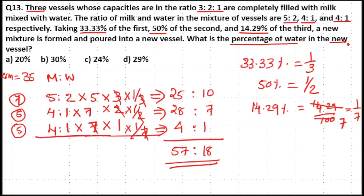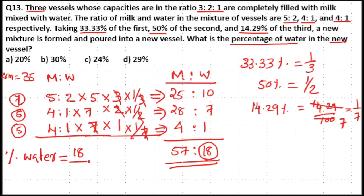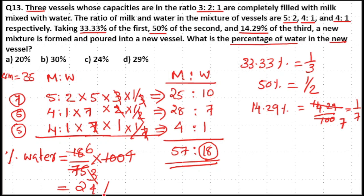The question asks for the percentage of water in the new vessel. Water is 18 units out of a total mixture of 57+18 = 75 units. So the percentage of water = 18/75 × 100. Since 25×3 = 75 and 25×4 = 100, and 3×6 = 18, this gives 6×4 = 24%. So 24% is the percentage of water, and option C is the answer.